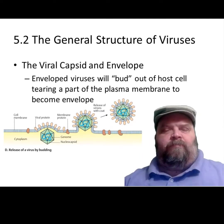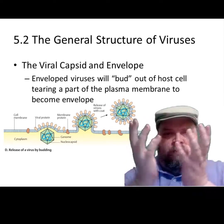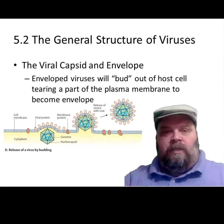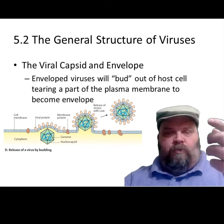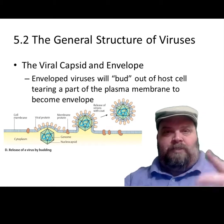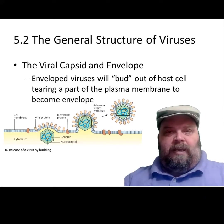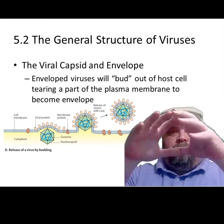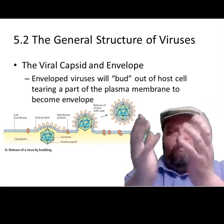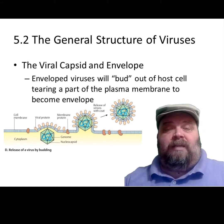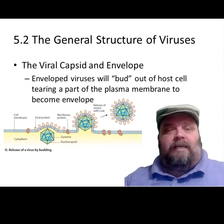Looking at a figure taken from a different textbook: as the capsid is complete — whether it's the icosahedron or helical form — it's wrapped around the genome and shuttled to the plasma membrane. There it interacts with viral spike proteins that have embedded themselves in the host cell plasma membrane. As more spikes interact with the capsid, the membrane bulges out and curves around, stretching and straining until it tears or reseals as two separate membranes. That's how viruses get their envelope.